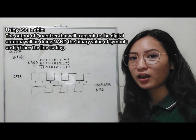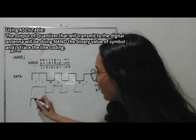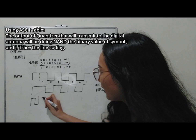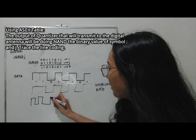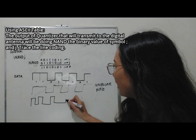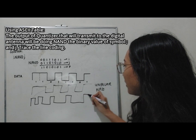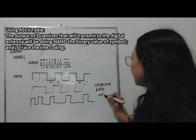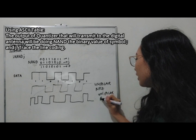For the unipolar RZ, each 1 is represented by a positive pulse for the first half of the bit duration, then returns to zero for the remaining half. For each 0, the signal remains at zero for the full bit duration. So we have: positive pulse half bit, zero, positive pulse half bit, zero, zero, positive pulse half bit, zero, positive pulse half bit, zero, positive pulse half bit, zero. This is the unipolar RZ waveform.